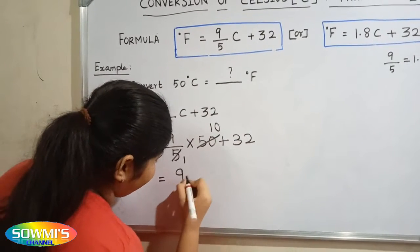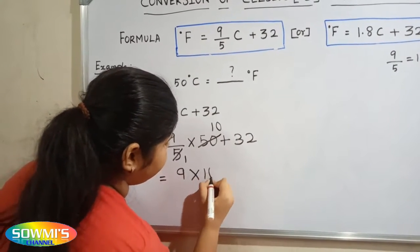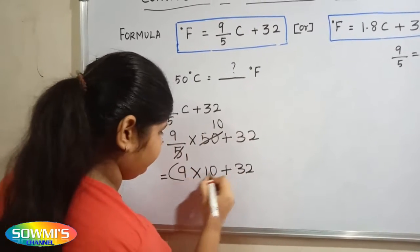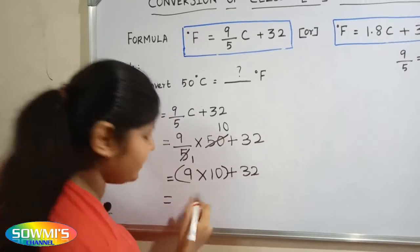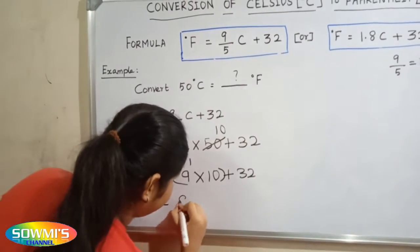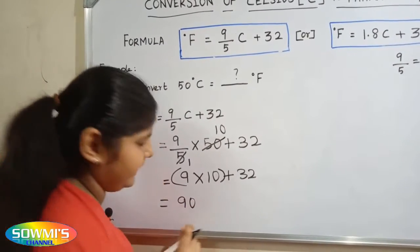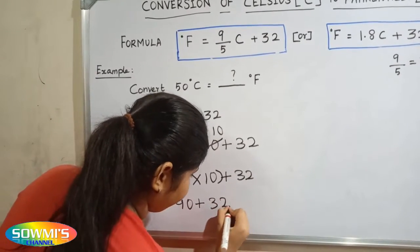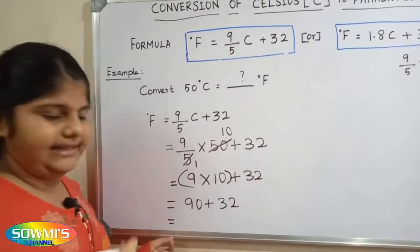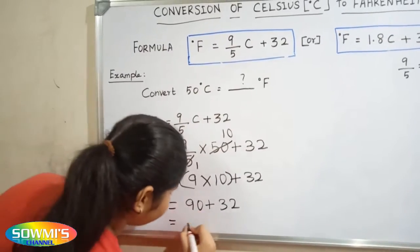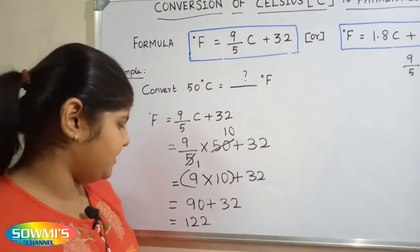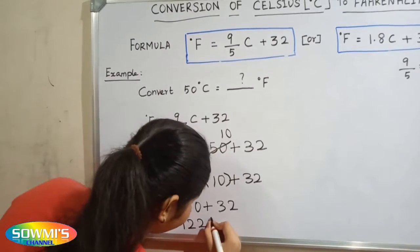9 multiply 10 plus 32. 9 tens are 90. 90 plus 32. 90 plus 32 is equal to 122. So, the answer is 122 degree Fahrenheit.